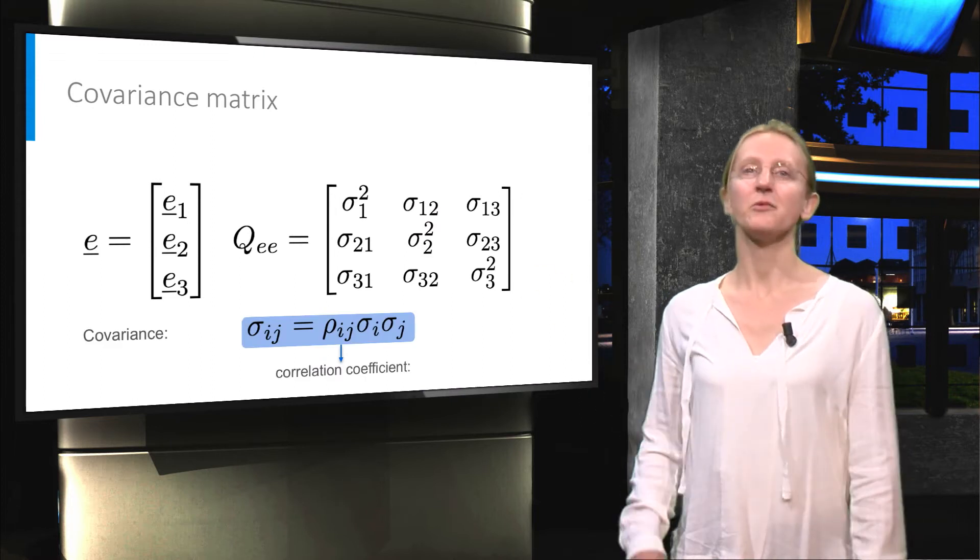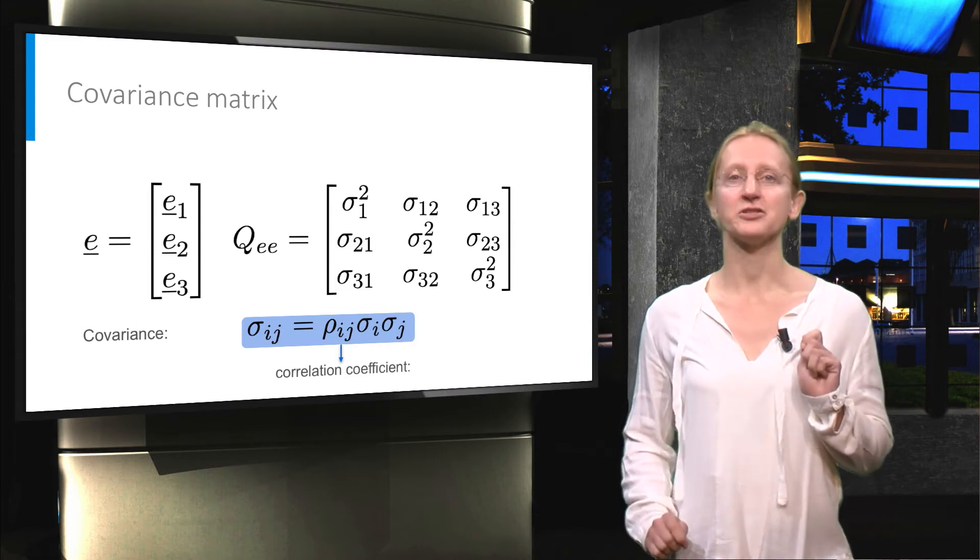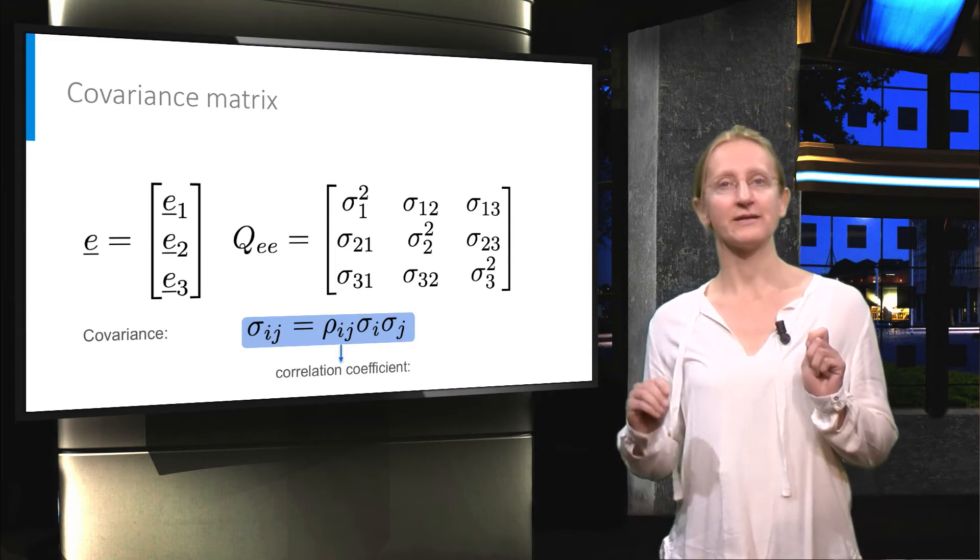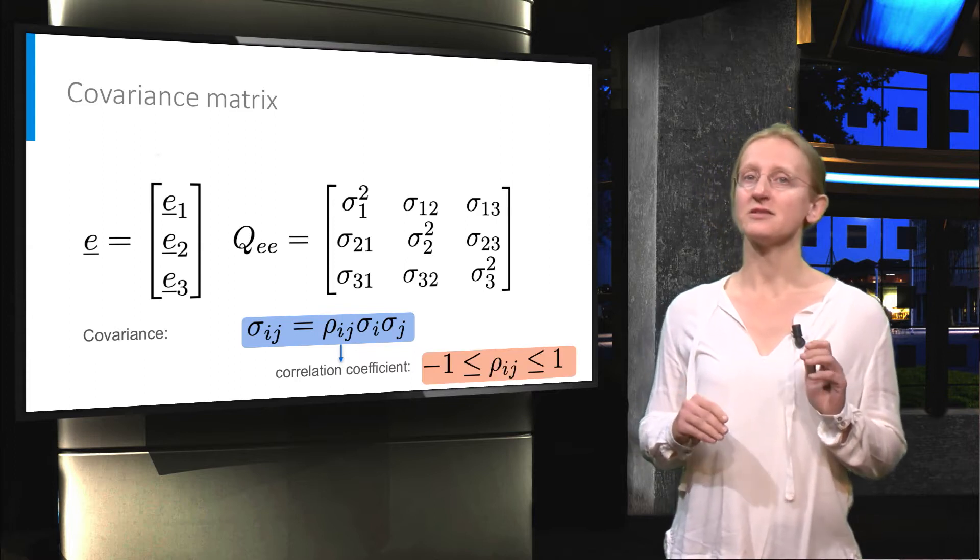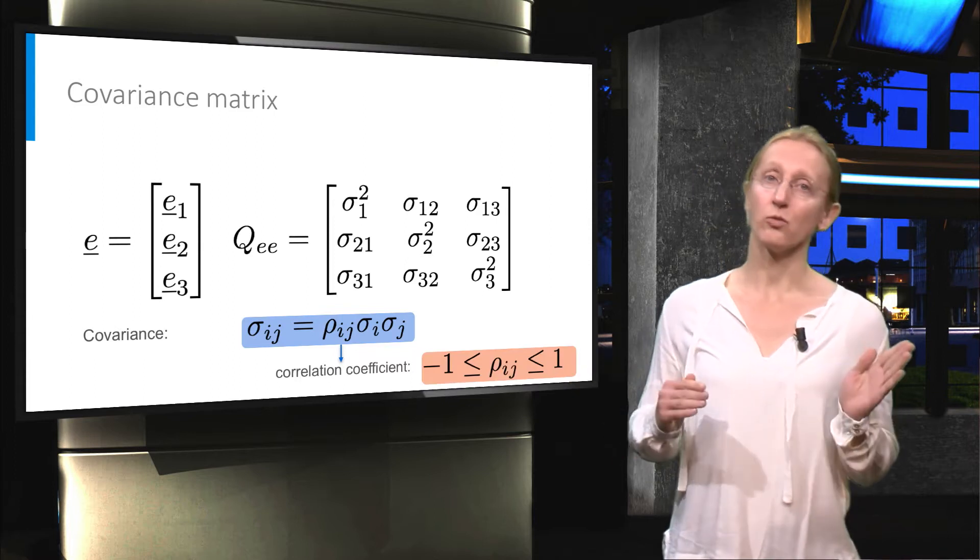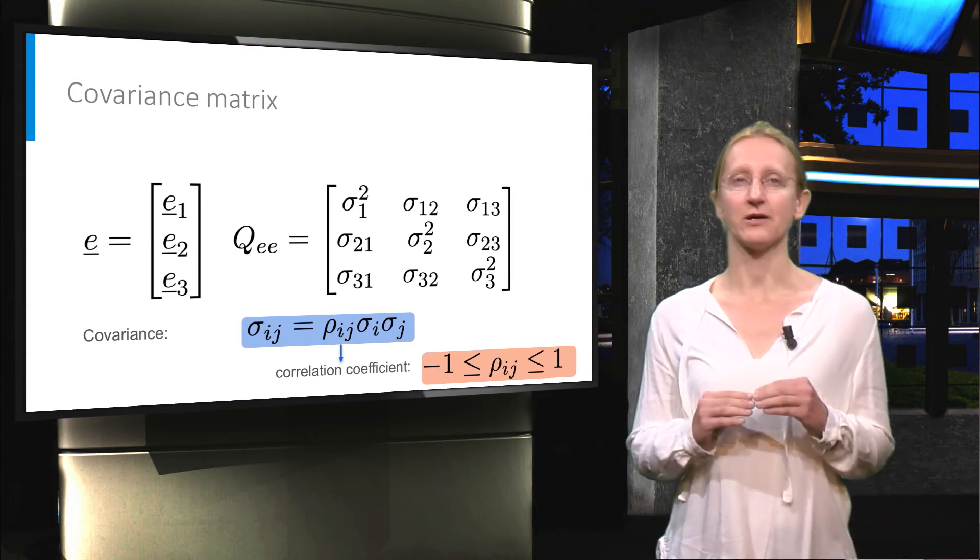As you can see from the formula in blue, it is equal to the correlation coefficient of two variables multiplied by their standard deviations. The correlation coefficient is a value between minus one and one, and the following examples explain how to interpret its value.